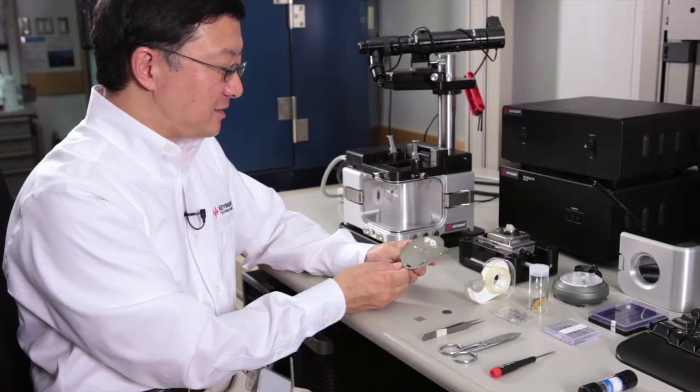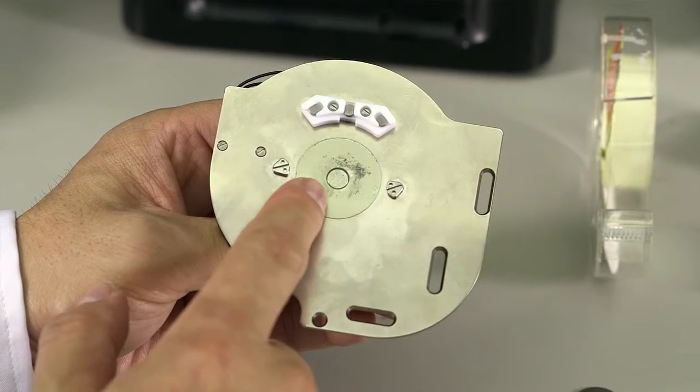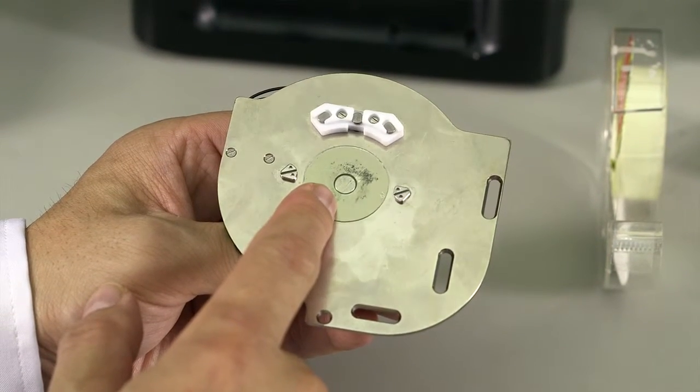This is the AFM's basic sample plate. In the center of the sample plate, there is a magnet to allow you to assemble your sample dish on top of it.